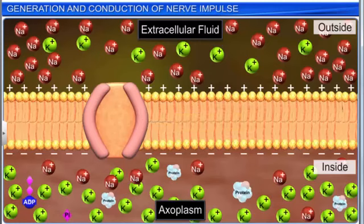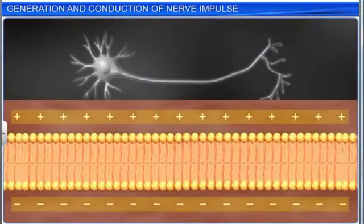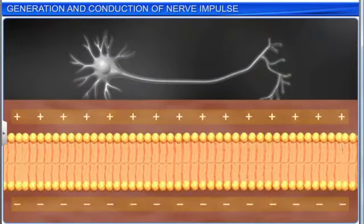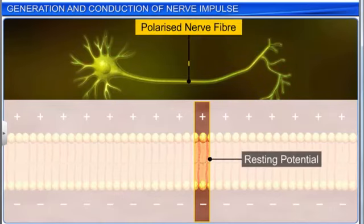The sodium-potassium pump transports three sodium ions outside the cell for every two potassium ions that enter the cell. This electrical potential difference across the membrane in an unexcited nerve fiber is called resting potential. And the neuron is called a polarized nerve fiber.